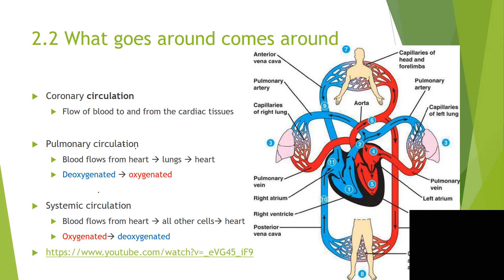The coronary circulation is the part of blood flow that supplies the heart muscle itself. The heart muscle also needs oxygen, so it has both coronary arteries and coronary veins on its outside. The coronary arteries give oxygen and nutrients to the heart muscle, and the coronary veins bring all the waste back and away from the heart muscle.